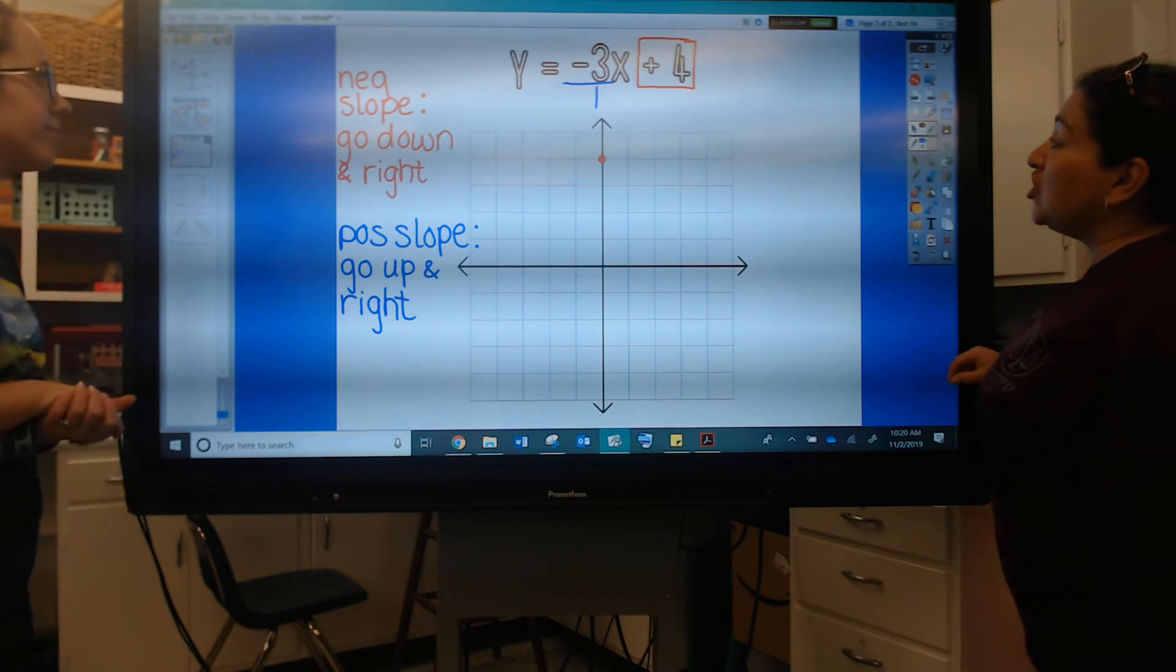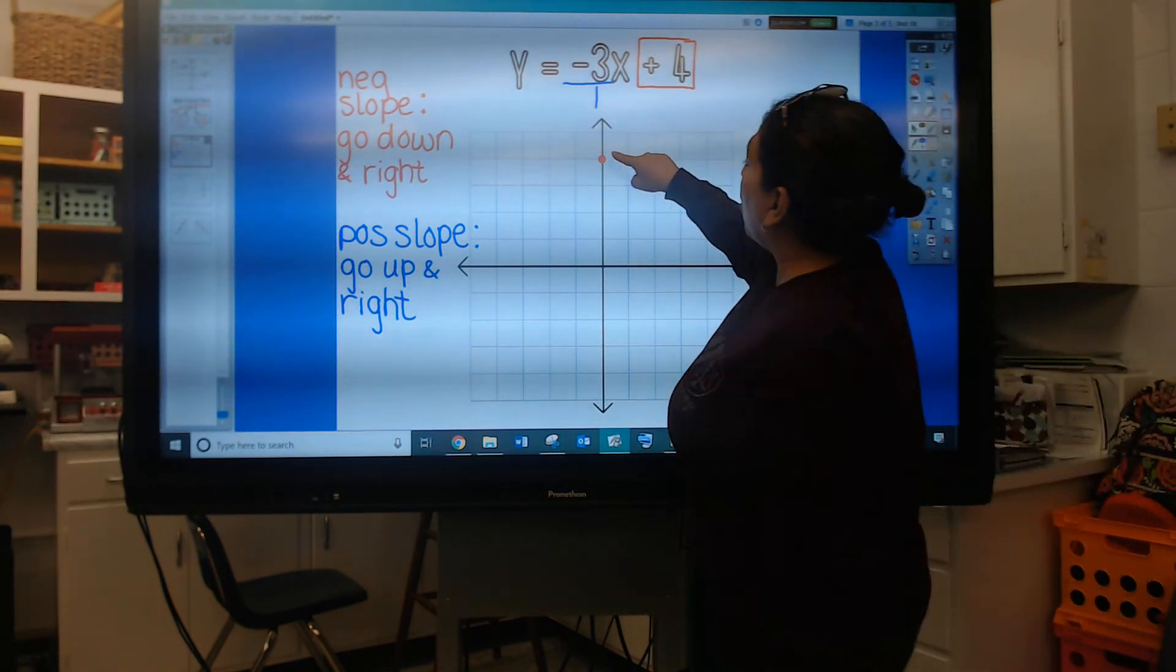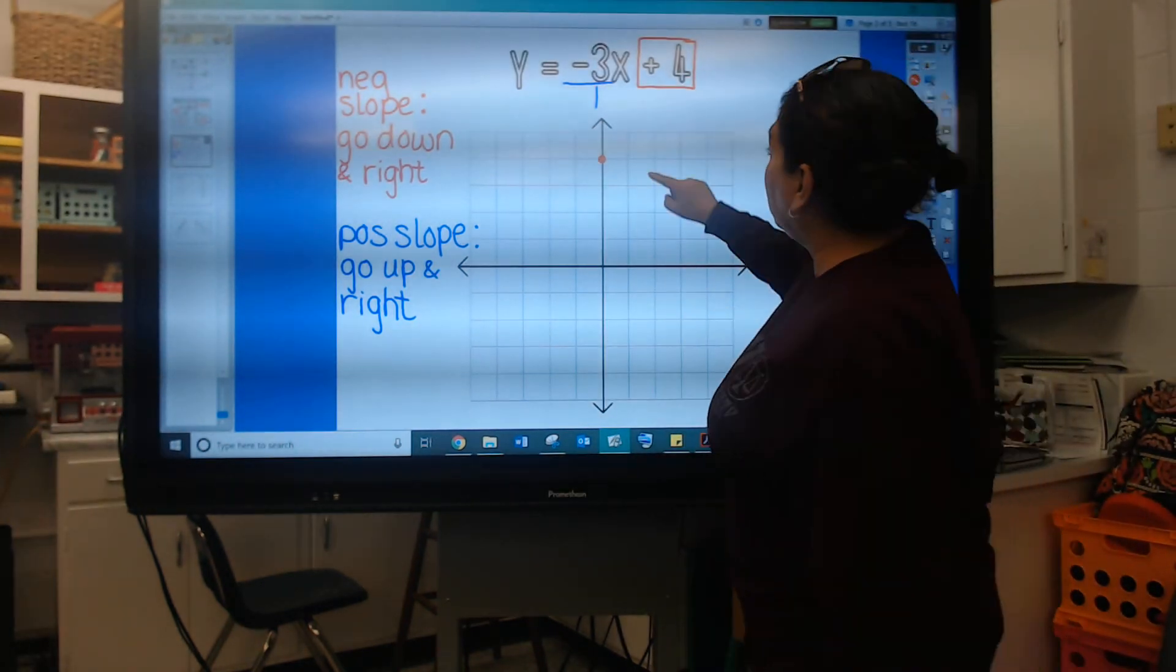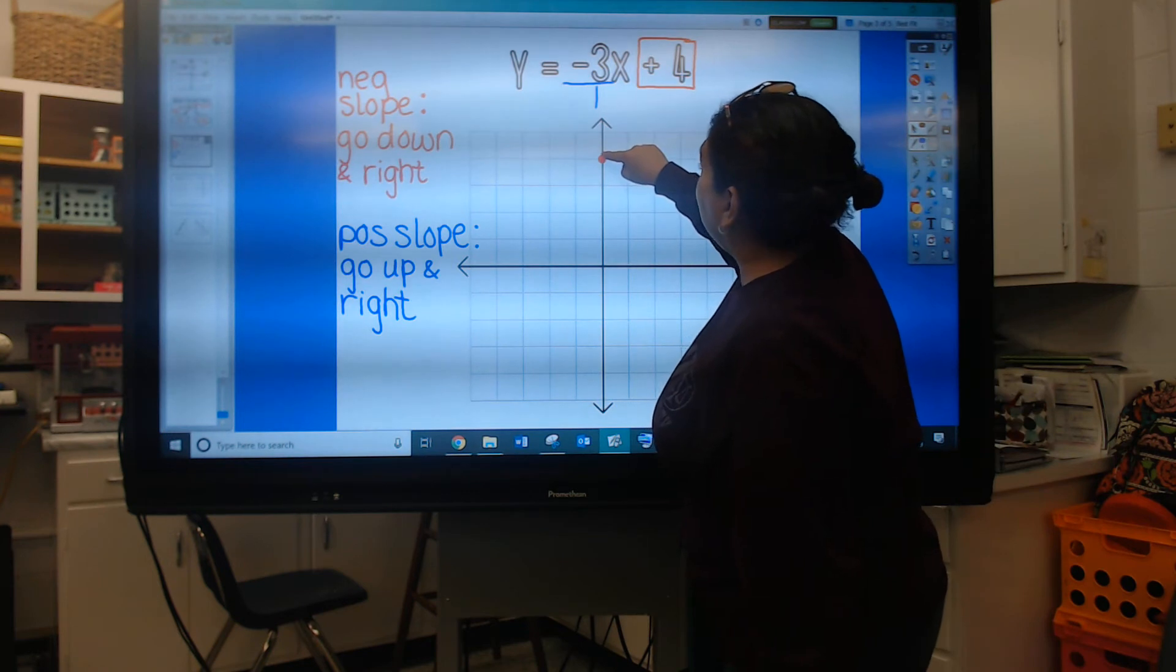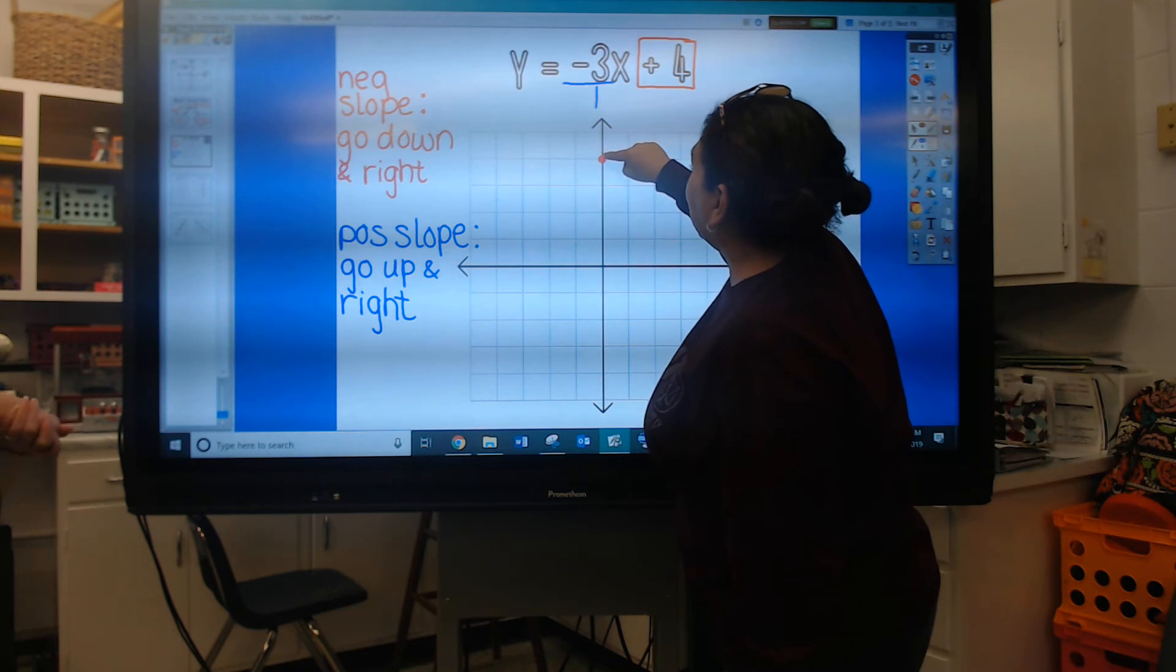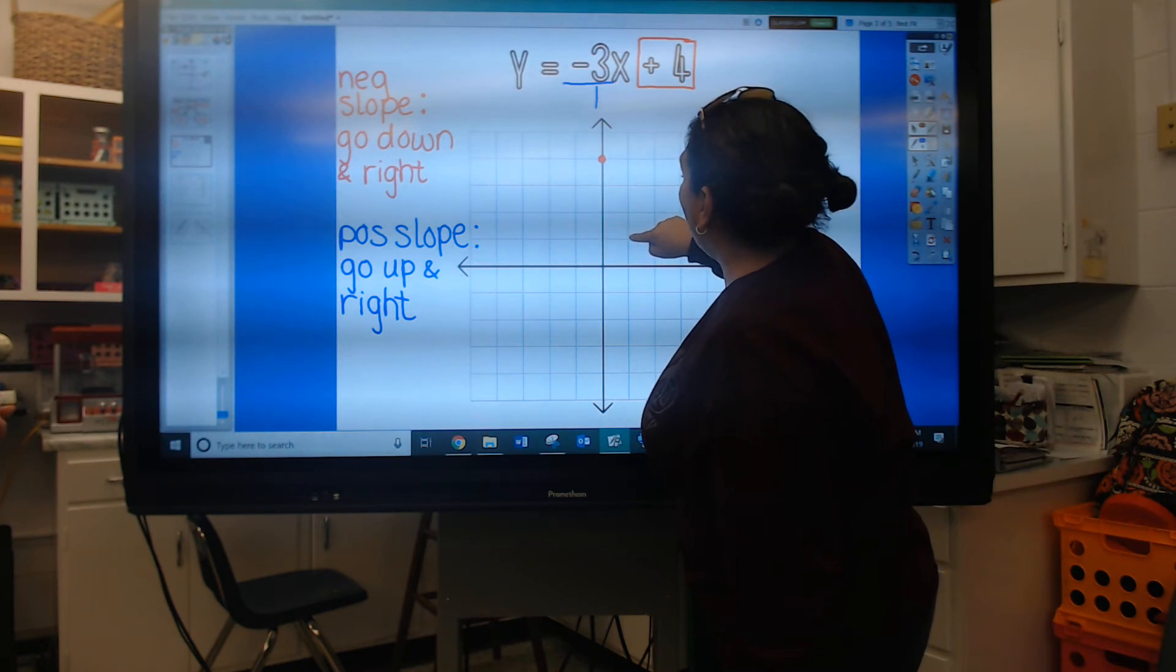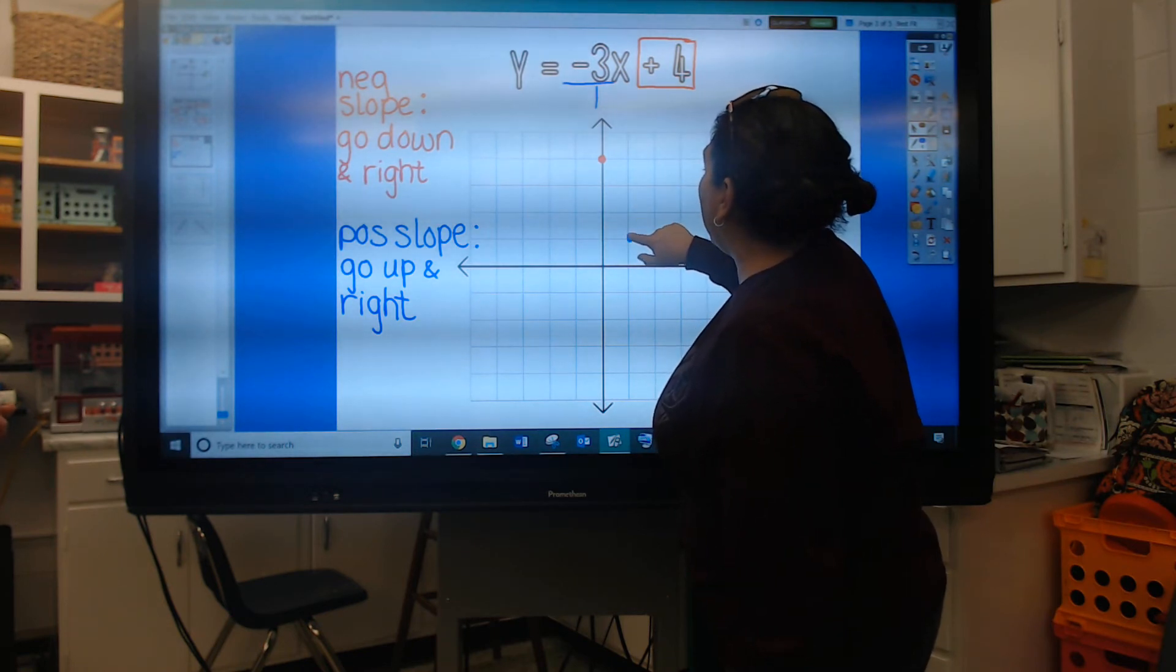All right so the first thing you're going to do is you're going to put your finger or your pencil tip or whatever you want to do right here at that positive four. It's a negative slope so which way am I going first Miss Vincent? Down. Exactly so I'm going to go down one two three and what's my run? One and I go right and I put a dot right there.